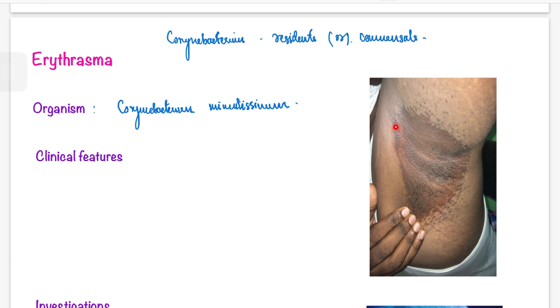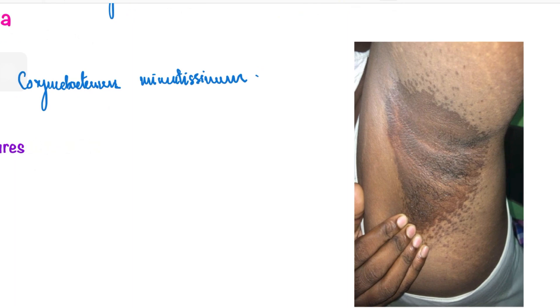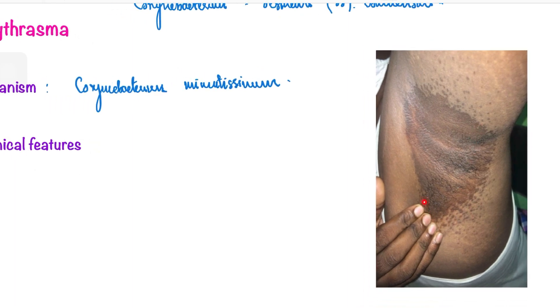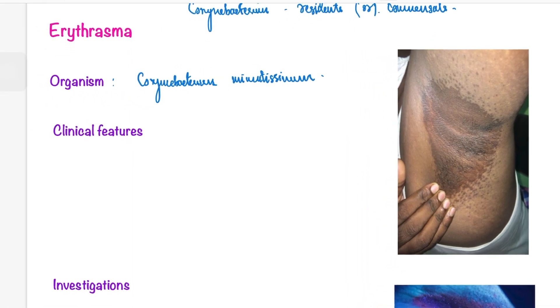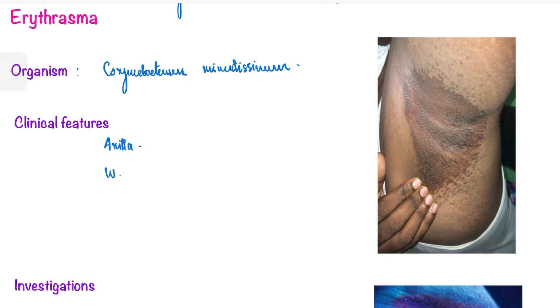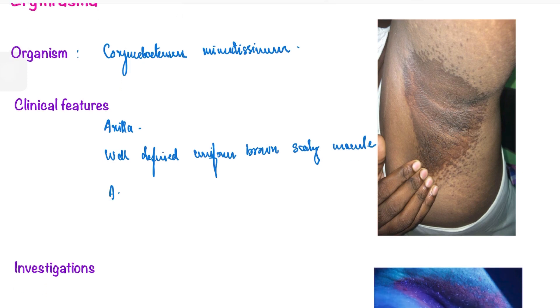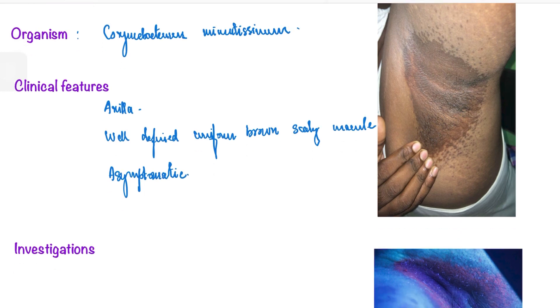As you can see from this picture, this is erythrasma. There is involvement of the axilla with a well-defined, uniformly brown scaly macule. These lesions are mostly asymptomatic.